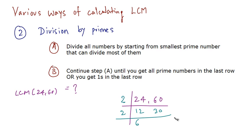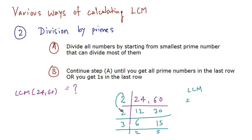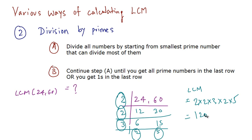Again these can be divided by 2, so we get 6 and 15. Now these cannot be divided by 2, so we divide by 3, giving us 2 and 5. We now have prime numbers in the last row, so we stop. We divide starting from the smallest prime number and stop when we get prime numbers or 1s in the last row. LCM is the product of all the divisors: 2 × 2 × 3 × 2 × 5 = 120. So the LCM is 120.